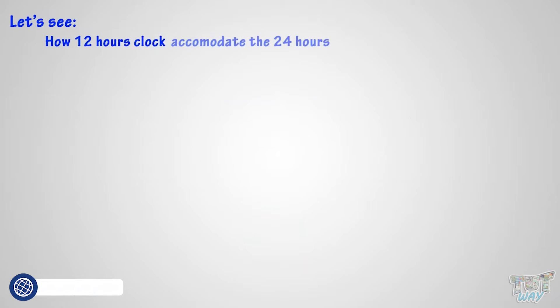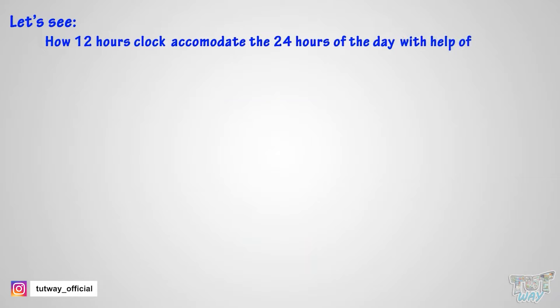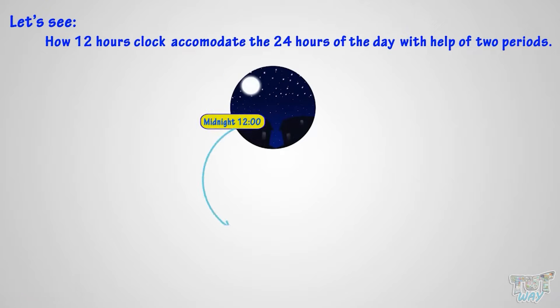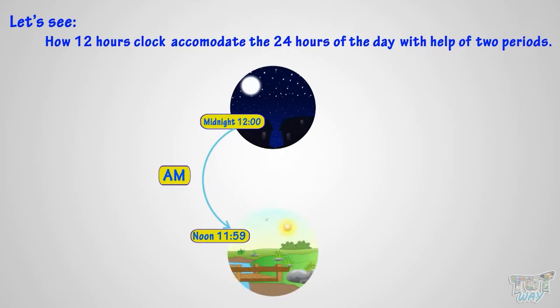Let's see how the 12-hour clock accommodates 24 hours of the day with the help of two periods: a.m. and p.m. The time from midnight 12 to noon — more precisely, 11:59 at noon — is called a.m. time.